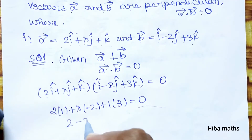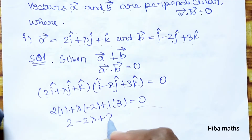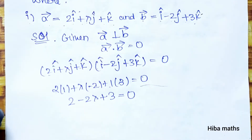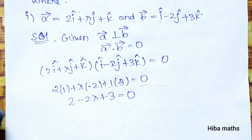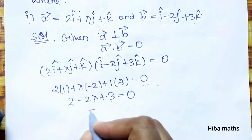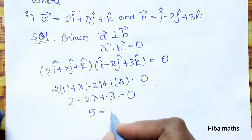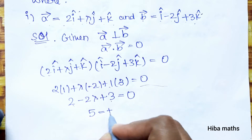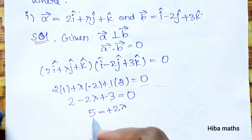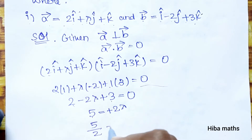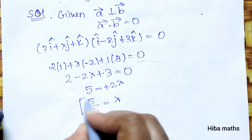So 2 minus 2λ plus 3 equals 0. That gives us 5 minus 2λ equals 0, so 5 equals 2λ, and therefore lambda equals 5 by 2. This is the answer for the first subdivision.